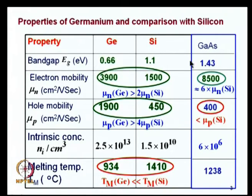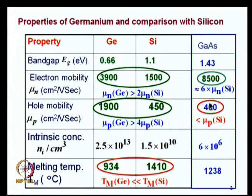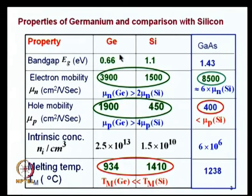A lot of effort went into GaAs work; HBT etcetera has happened, but MOSFET had limited success - not because of the MOSFET itself, but because CMOS cannot be done with gallium arsenide. At this stage, since electron mobility is higher but hole mobility is low, thought came back to the original material on which the transistor was invented - germanium. In 1947, the transistor was invented by Shockley, Bardeen, and Brattain using germanium, and the original effort was toward making a MOSFET with germanium.